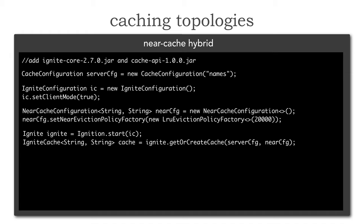I start Ignite, passing in that Ignite configuration which sets my client mode to true. And so that gives me that client library. Then I do a getOrCreateCache passing in both that server config as well as the near config.